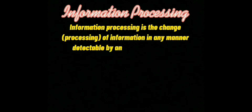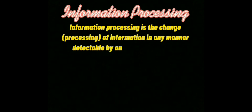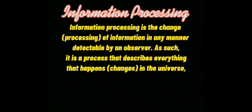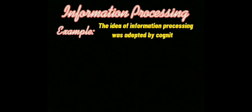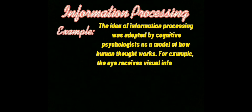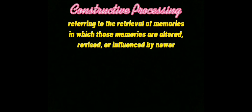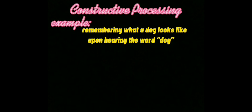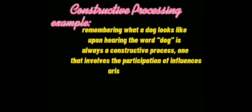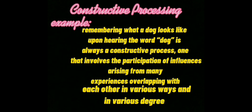Information processing is the change of information in any manner detectable by an observer. It describes everything that happens in the universe, including electrical neural activity which is fed back to the brain where it is stored and coded. The idea of information processing was adopted by cognitive psychologists as a model of how human thought works — for example, the eye receives visual information and codes it. Constructive processing refers to the retrieval of memories in which those memories are altered, revised, or influenced by newer information — including hindsight bias, the tendency to falsely believe, through revision of older memories, that one could have correctly predicted the outcome of an event. For example, remembering what a dog looks like upon hearing the word 'dog' is always a constructive process.